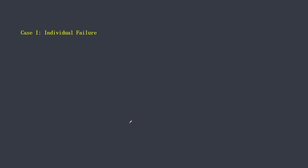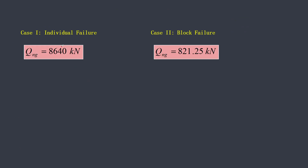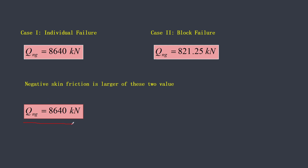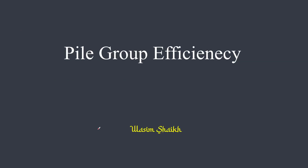Now you have two values: 8640 kN for individual failure and 821.25 kN for block failure. The final answer is the larger value, because this is an undesirable condition — you want to design for maximum distress. So the final answer is 8640 kN. In the next numerical, we will cover pile group efficiency.